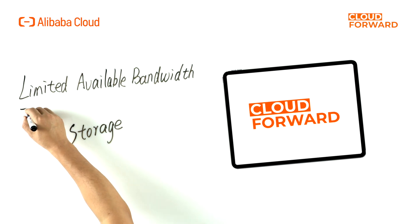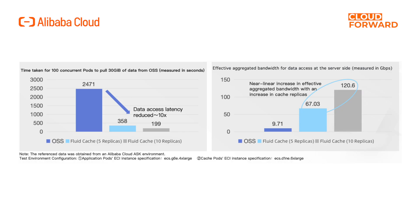Now let's discuss the issues of limited available bandwidth for storage. If bandwidth is evenly distributed among concurrent inference service instances, the response time of each inference service instance is going to slow down, leading to more serious cold-start problems. For example, if an OSS bucket with 10 Gbps bandwidth is evenly divided among 100 inference service instances, each instance has only 0.1 Gbps of available bandwidth. Fluid utilizes the elastic scaling of computation-side distributed caching to provide elastic and scalable available bandwidth, not proportional to the specifications and quantity of distributed caching nodes.